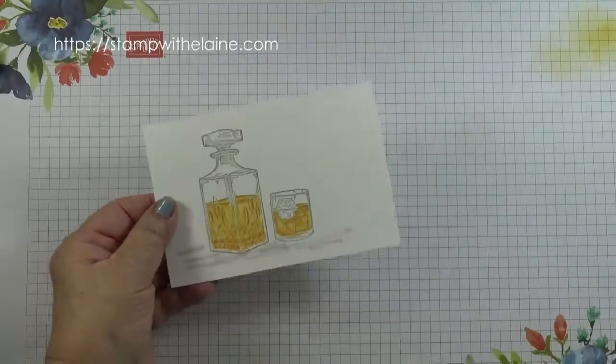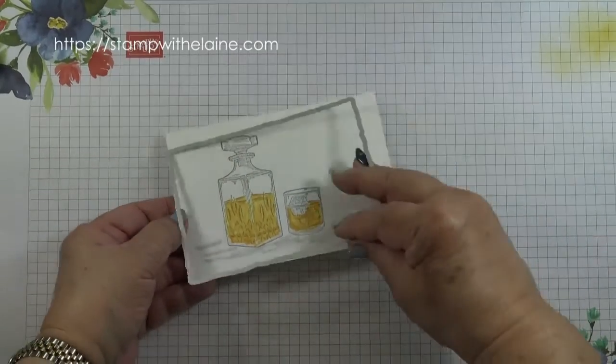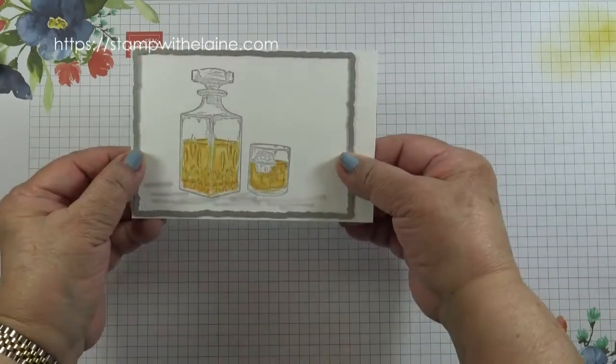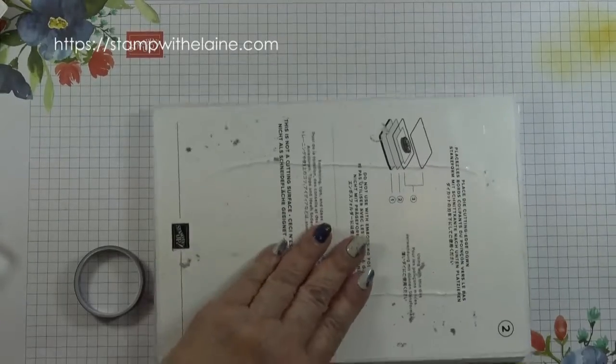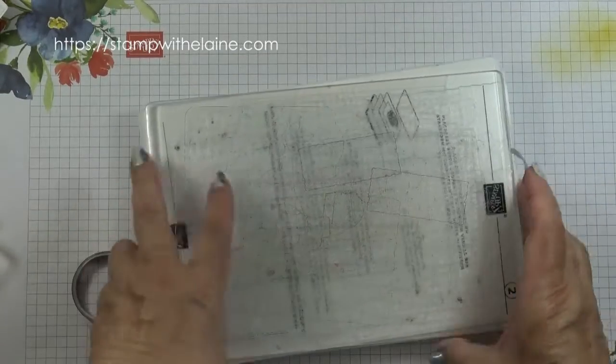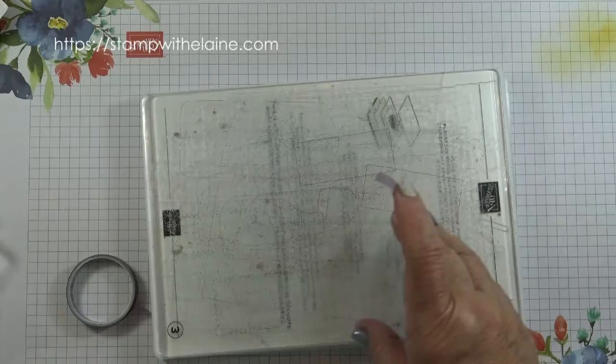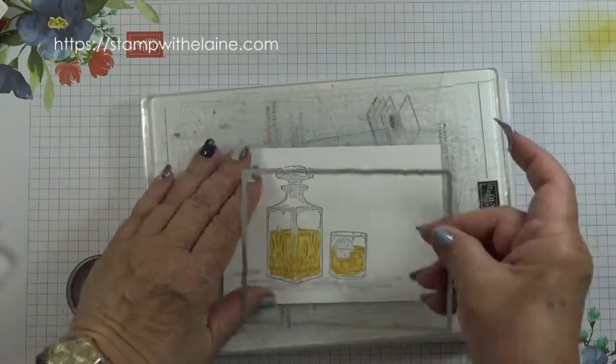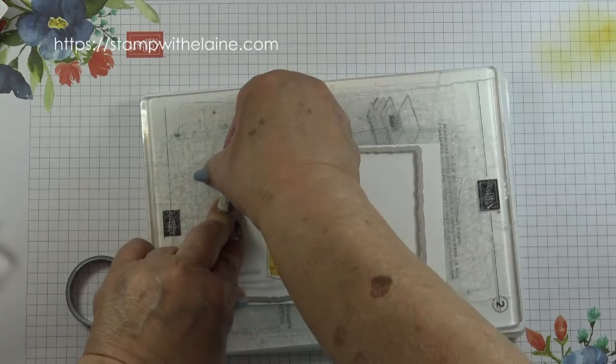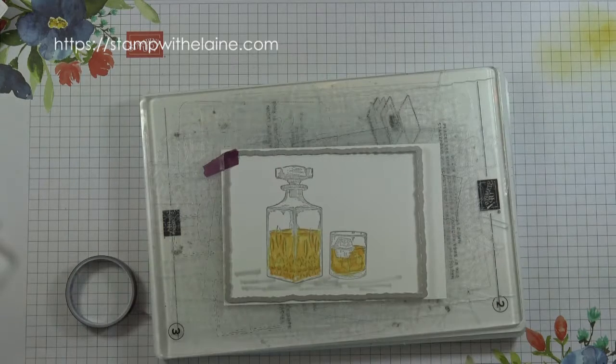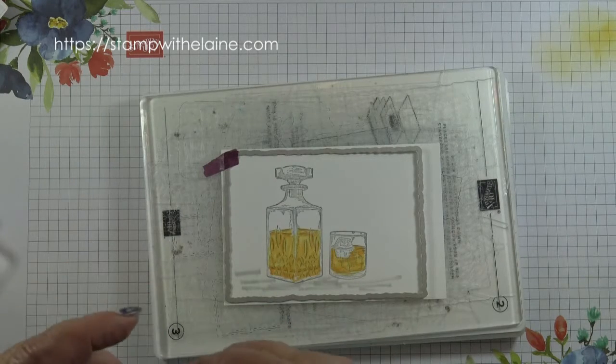Now I'm ready to die cut my elongated deckled rectangle. Bring in my platform, platform one, platform two, the thin die adapter, the base cutting plate, platform three. Place my cardstock on top and the deckled edge. Stick that down so it doesn't move.